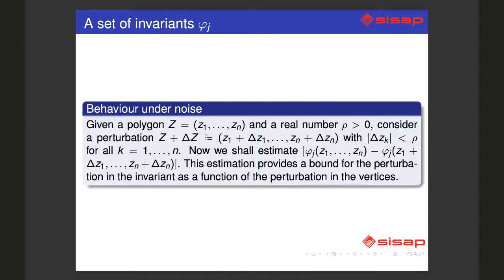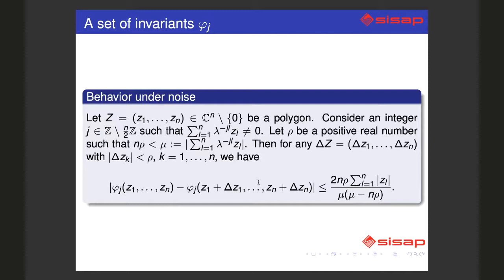That means that small changes in the argument will produce small changes in the output. And we can estimate very precisely how the distance between the original image and the perturbed image of the same polygon changes.